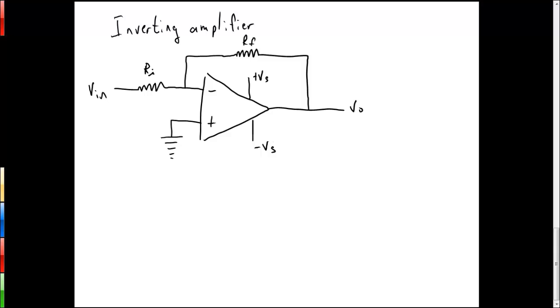We can use golden rule number one to say that there is no current flowing into the op amp through either of the input terminals.